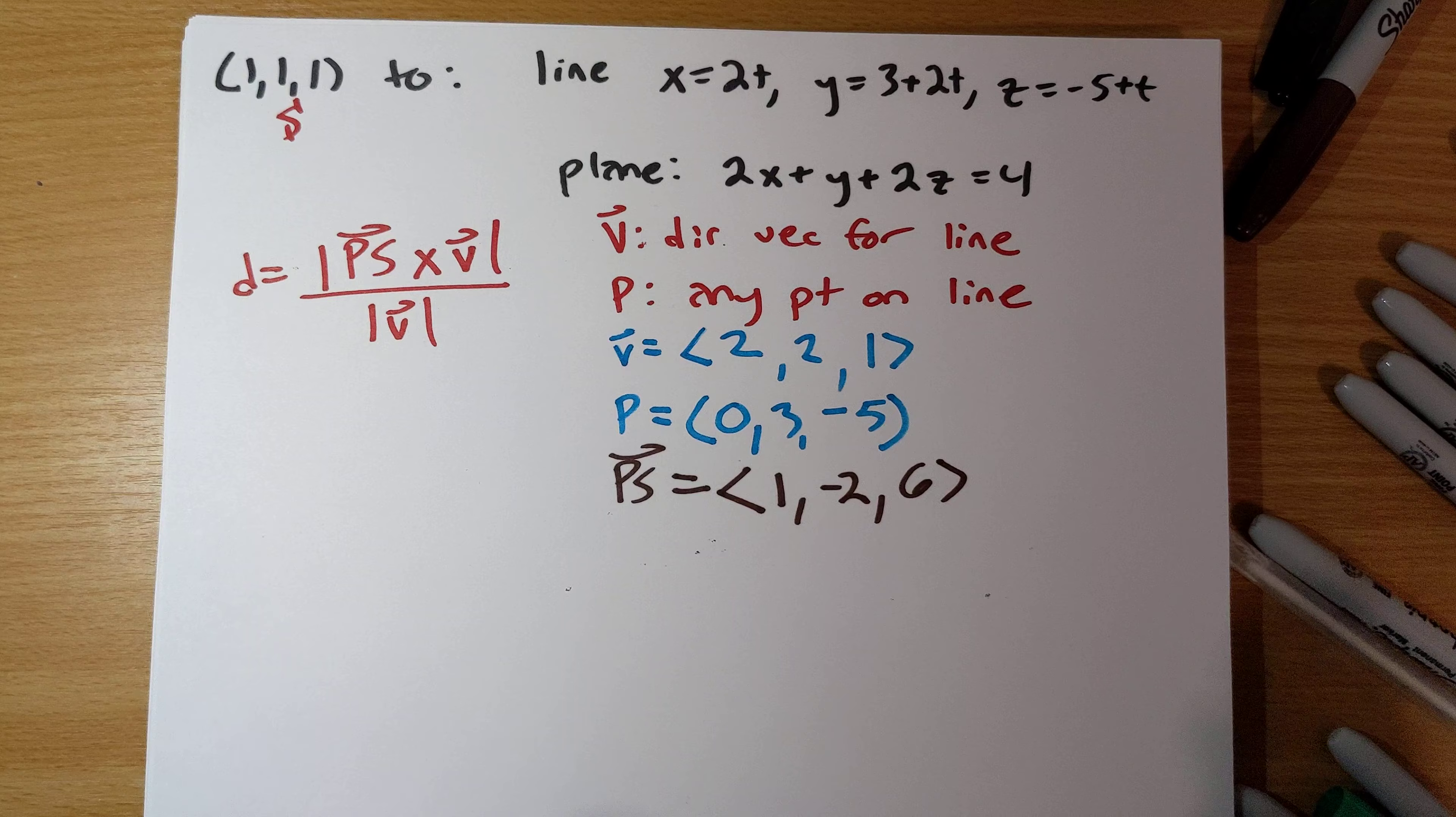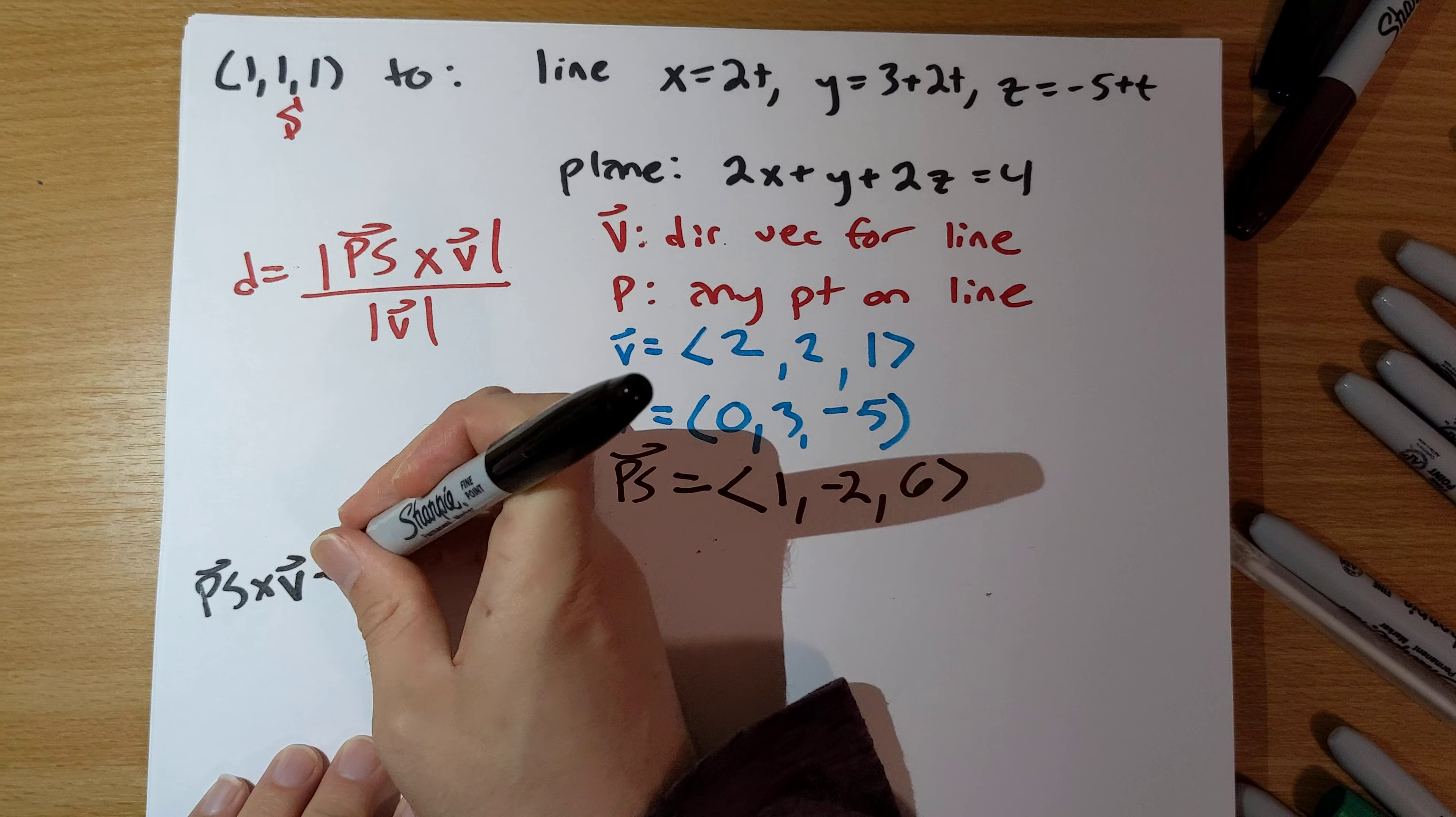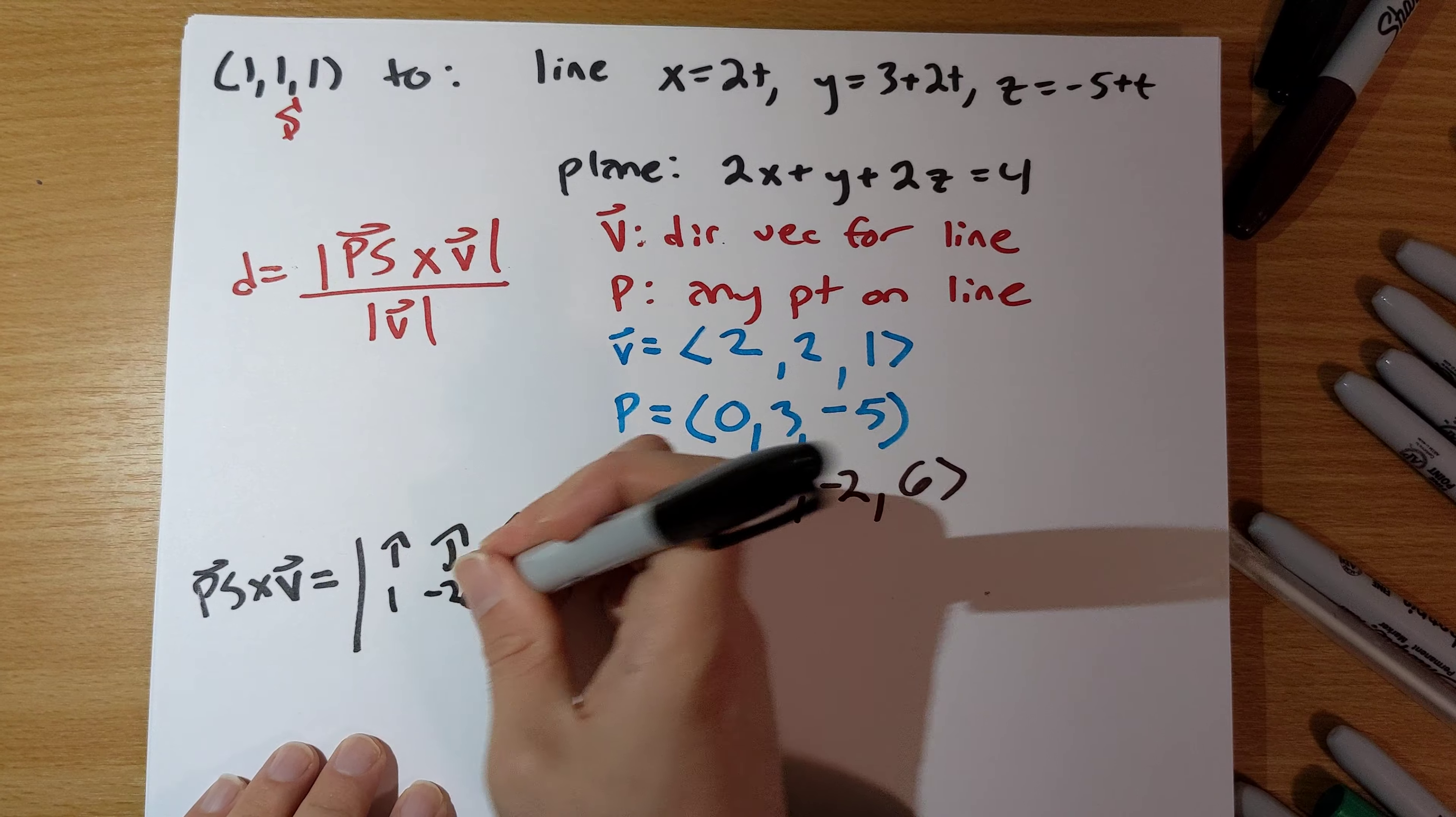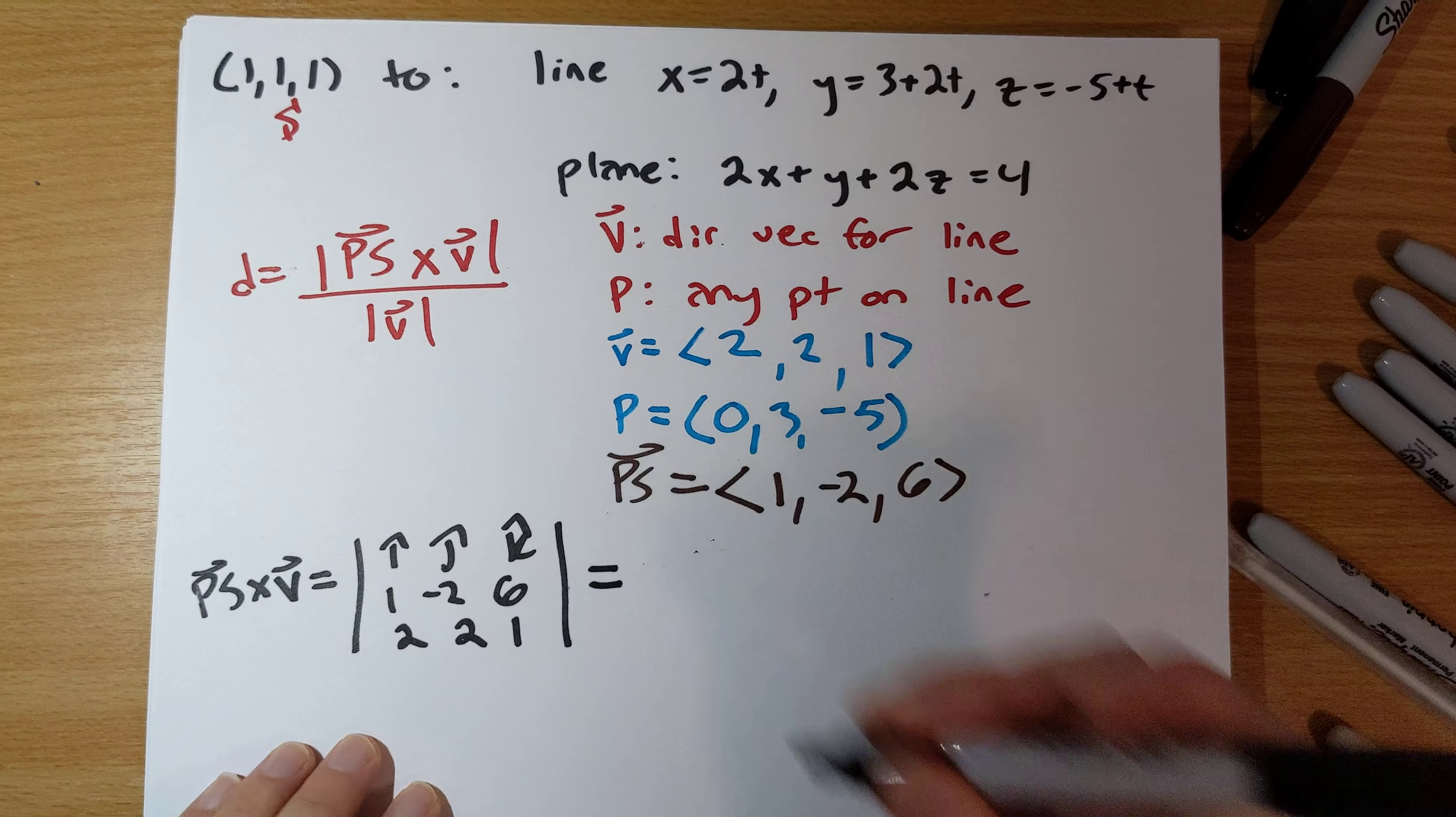Okay, so at this point then, we just need to do PS cross product with v. i hat, j hat, k hat. PS is 1, negative 2, 6. v is 2, 2, 1.